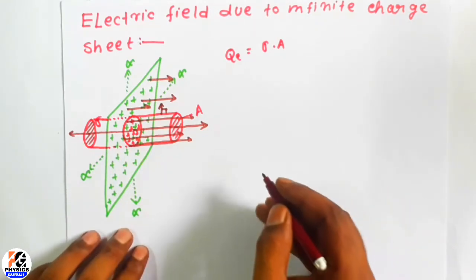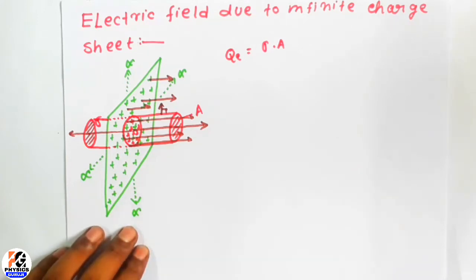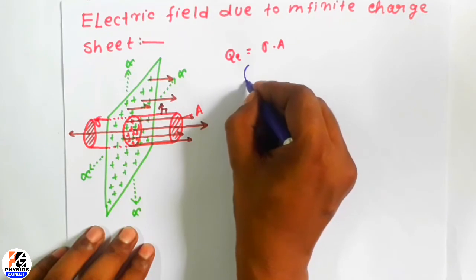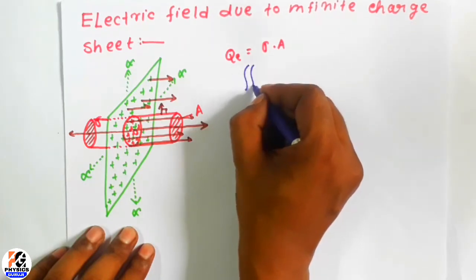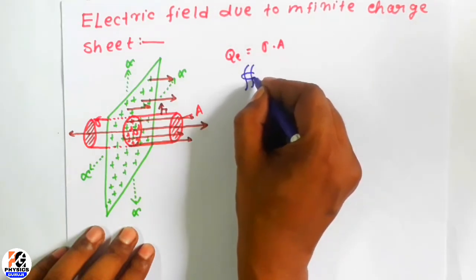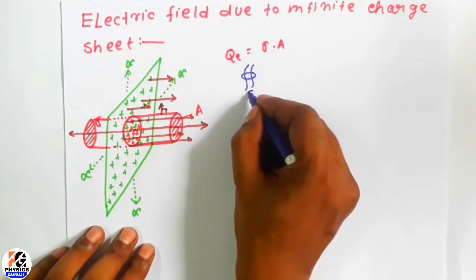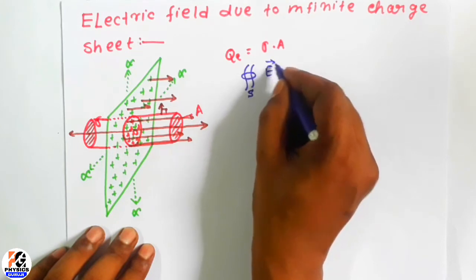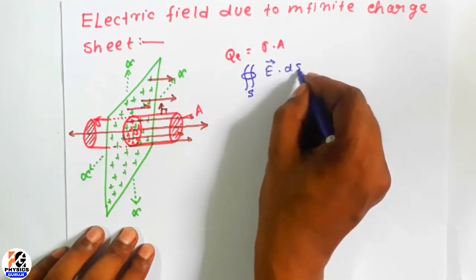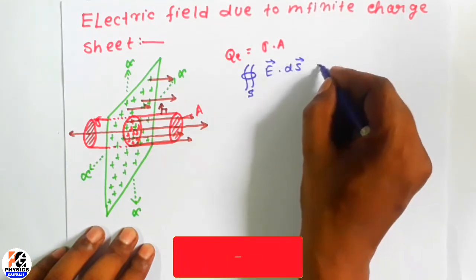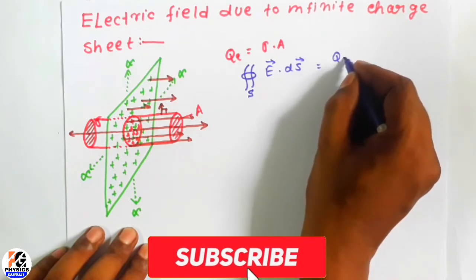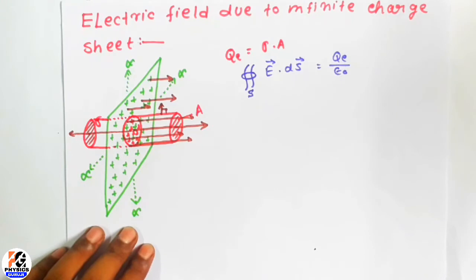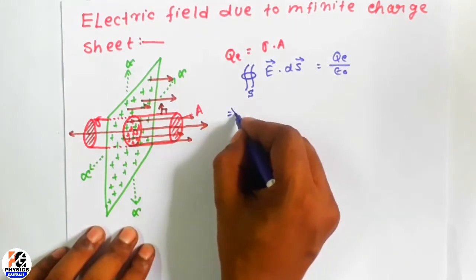So it is easier to apply Gauss's law now. From Gauss's law we know that the closed surface integral — this is a double integration, a surface integration — the closed surface integral of E dot dS will be equal to Q enclosed divided by epsilon naught.